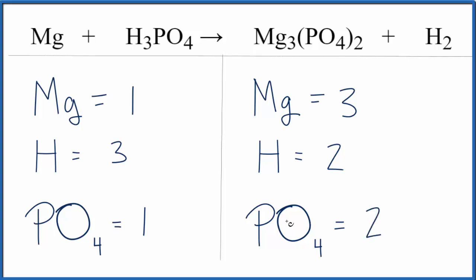Why don't we fix the PO4s? We could just put a coefficient of two in front of the H3PO4, the phosphoric acid, and this two will apply to everything here.